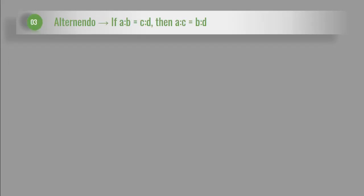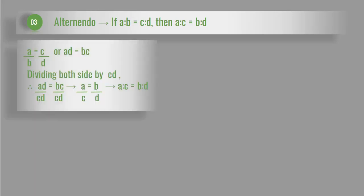Third, alternando property. If A is to B is equal to C is to D, then A is to C is equal to B is to D. Here A over B is equal to C over D. By the cross product rule, we can write AD is equal to BC. Now dividing both sides by CD, we get AD over CD is equal to BC over CD. So D cancels and C cancels, giving A over C is equal to B over D. Therefore, A is to C is equal to B is to D.